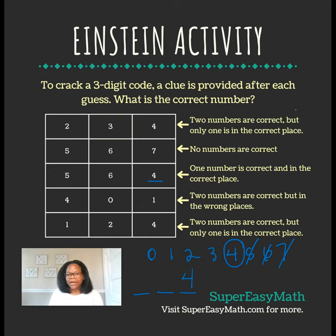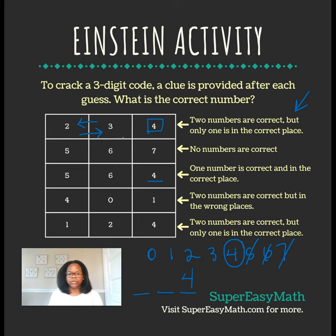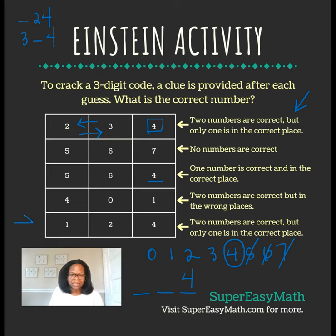Let's head back up to the first clue and reread it. It says two numbers are correct but only one is in the correct place. Since we already determined it's the 4 that is correct, that means either the 3 is the first digit or the 2 is the second digit. The 2 or the 3 is going to act as the number that is correct but in the wrong place, so our number is either something-2-4 or 3-something-4.